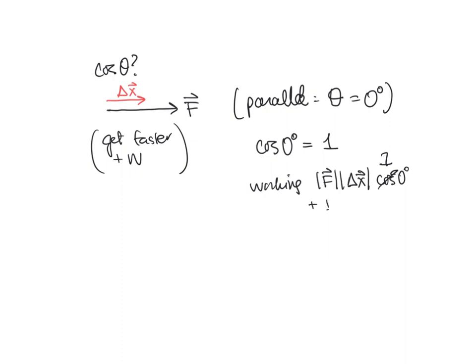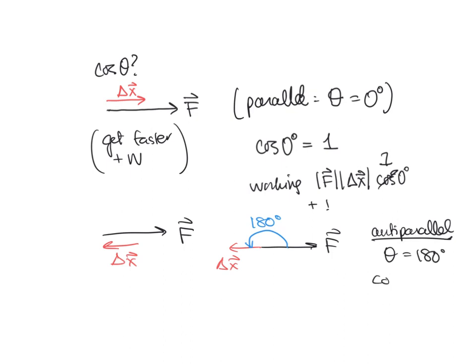Now, what happens if we push opposite to the direction of the force, or if the object is moving in the opposite direction from our force, like we're trying to stop a shopping cart or something? So these two vectors are actually 180 degrees apart. You can kind of see that if you do this. So I put the tails together. Then our angle is 180 degrees. So anti-parallel, we would call this.